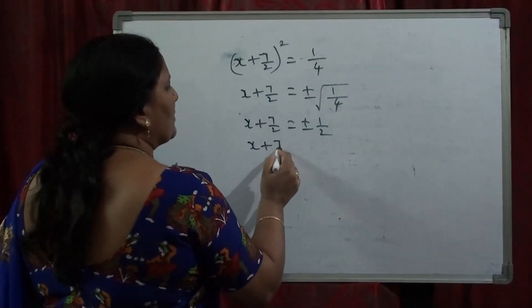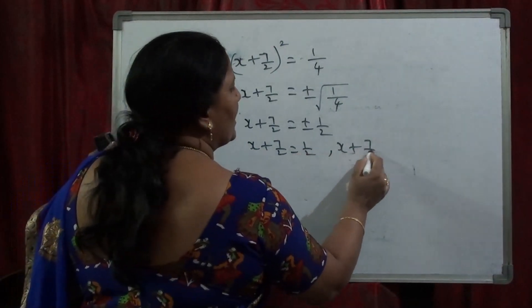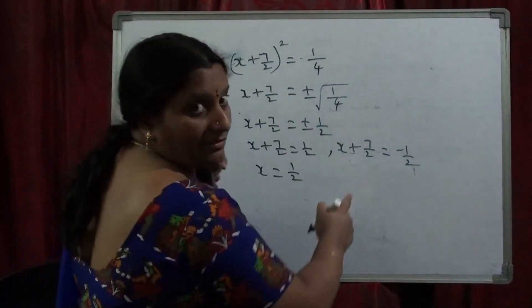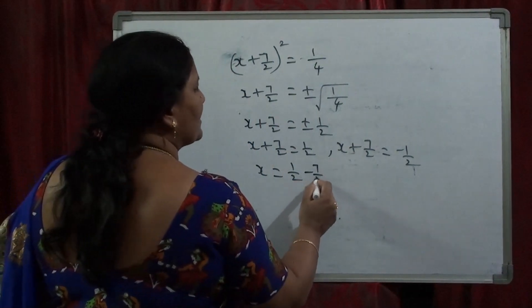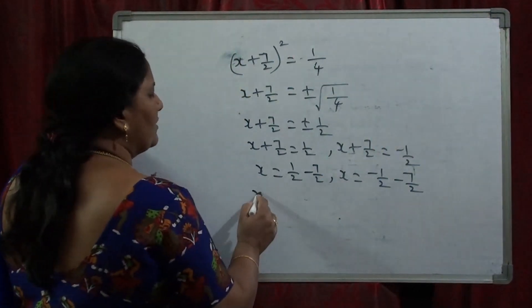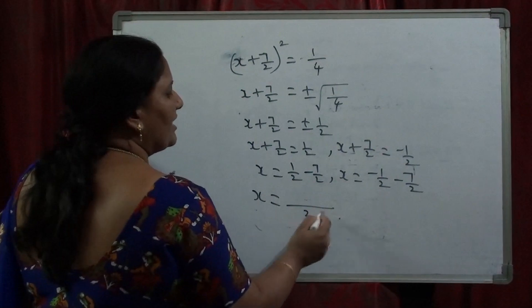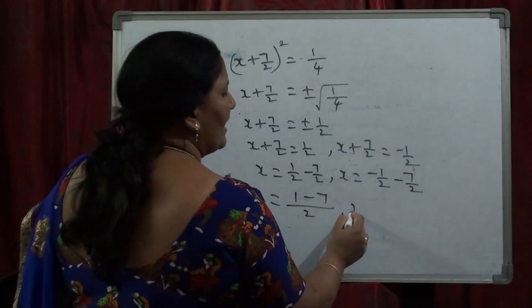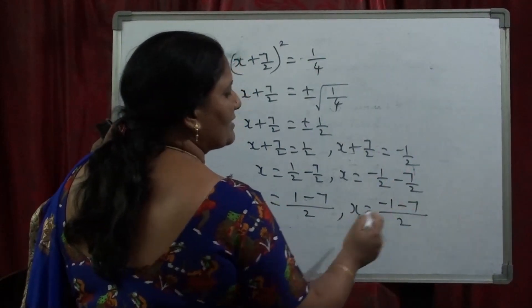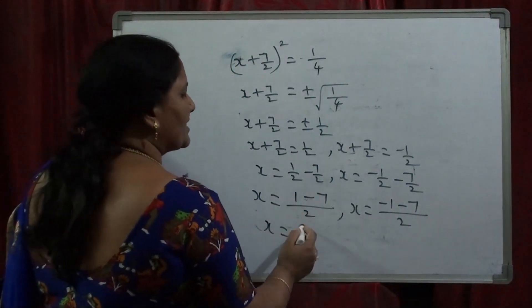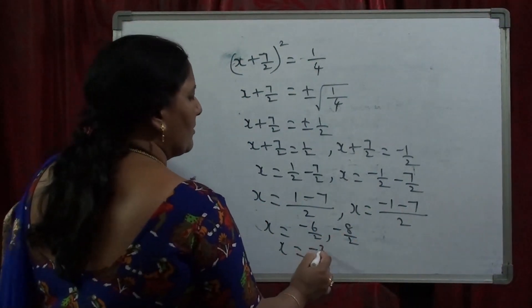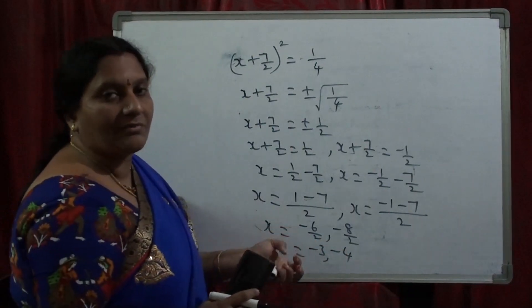We take two cases: x + 7/2 = 1/2 and x + 7/2 = −1/2. Sending +7/2 to the other side it becomes −7/2 in both cases. Since denominators are the same, we simplify numerators directly. For the first case: x = (1 − 7)/2 = −6/2 = −3. For the second case: x = (−1 − 7)/2 = −8/2 = −4. So x = −3 or x = −4. These are the roots of the quadratic equation x² + 7x + 12 = 0.